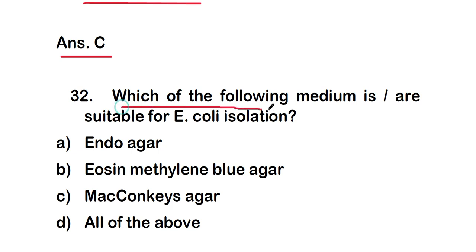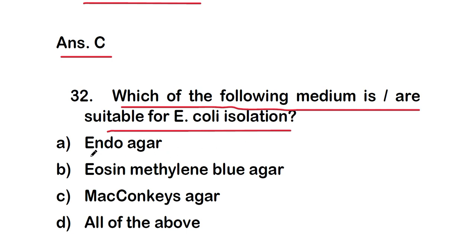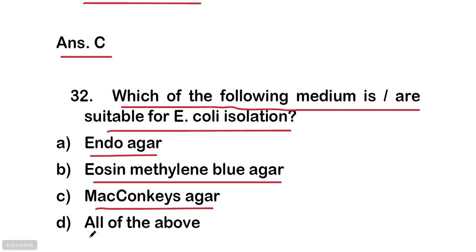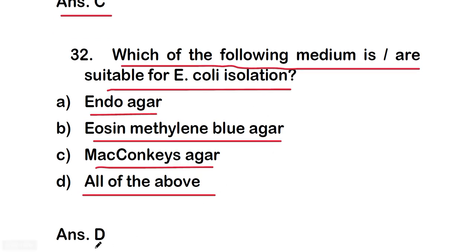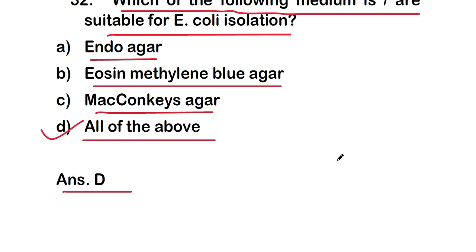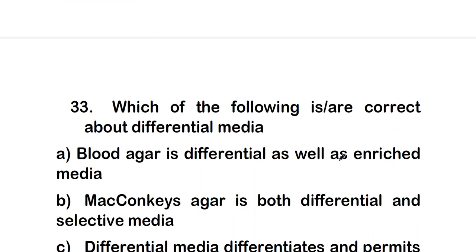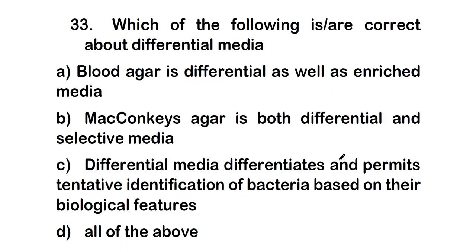Question 32: which of the following media are suitable for E. coli isolation? Option A: Endo agar, B: Eosin methylene blue agar, C: MacConkey's agar, D: all of the above. The right answer is option D — all of these media are used for isolation of E. coli.